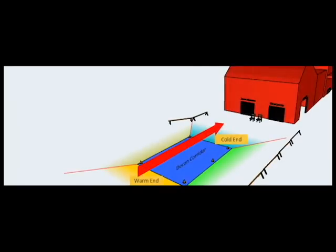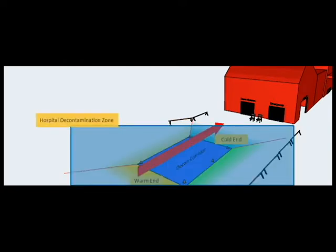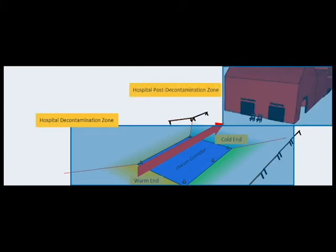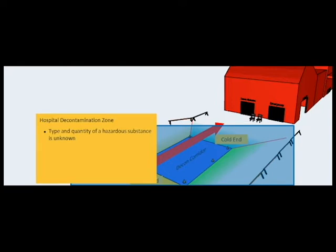The decon area is a secured location where all facets of the emergency decontamination operation occur. It is conceptually divided into two zones that demarcate the level of contamination anticipated and the patient care activities to be performed. These two functional zones include the hospital decontamination zone and the hospital post decontamination zone.